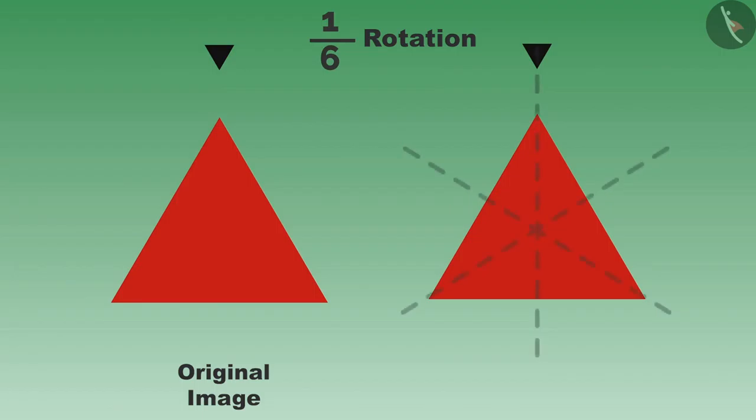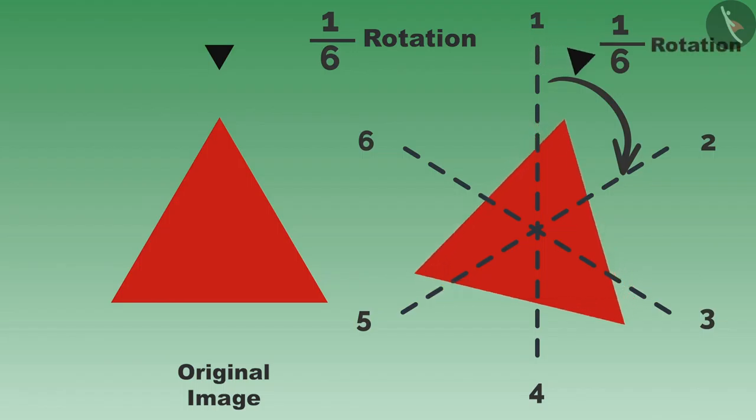You can see that these six lines are passing through the center. If you have to do a one-sixth rotation, then rotate this picture in this way.